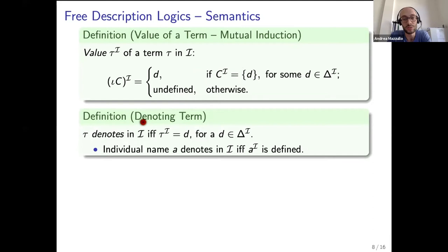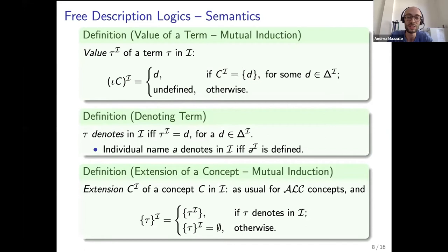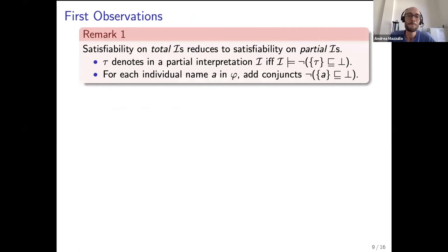We say that a term denotes in I if the value of the term is defined in I. The extension of a concept C in I is given as usual for ALC concepts, while for nominals the extension of nominal tau in I is the singleton containing the value of tau in I if tau denotes, and the empty set otherwise.